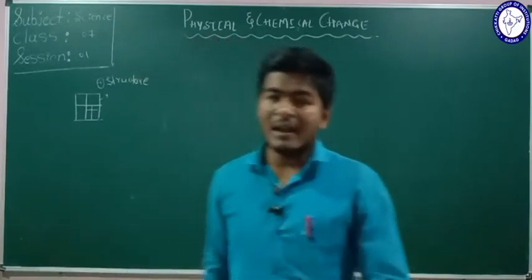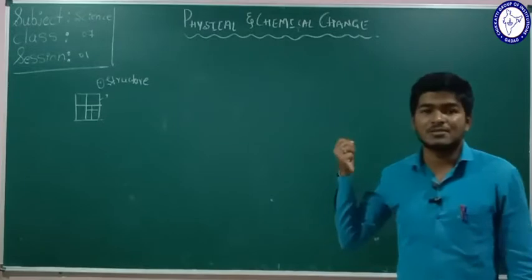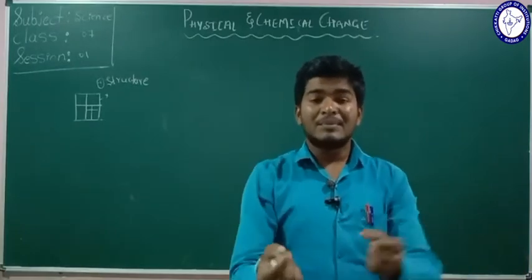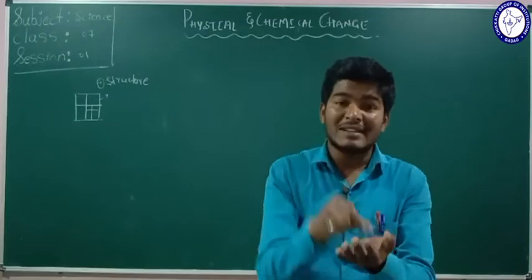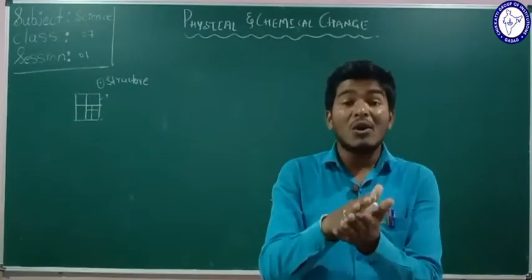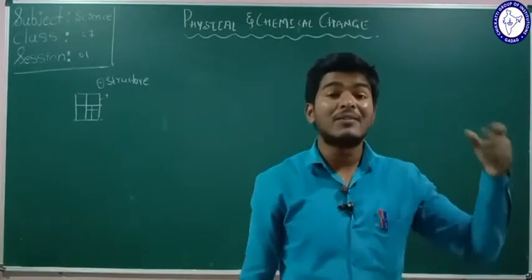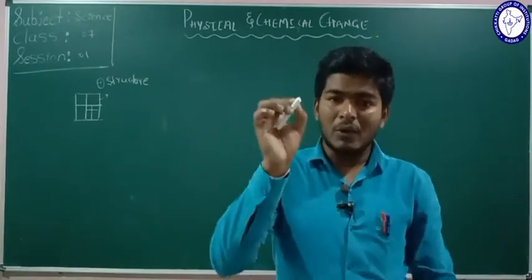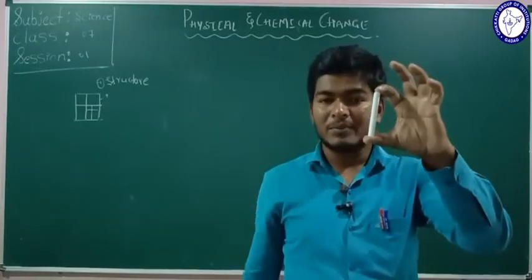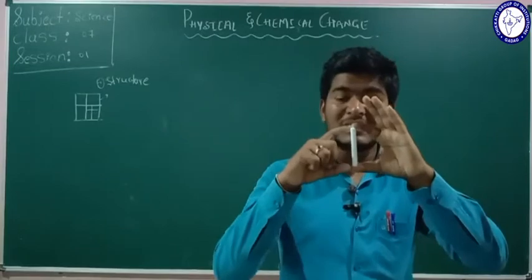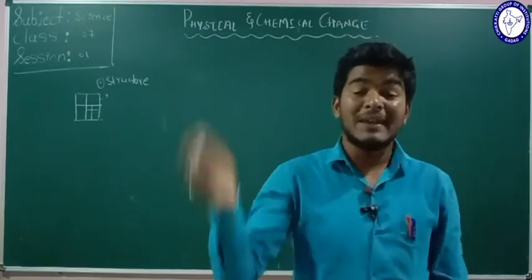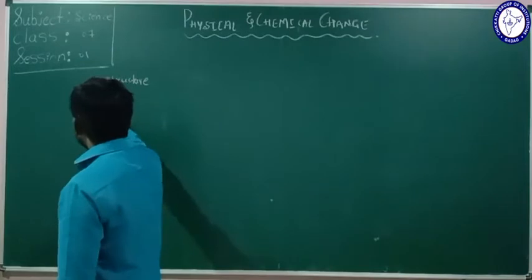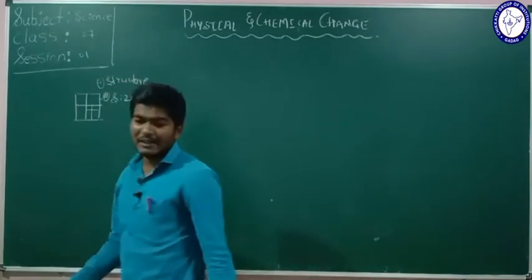Another example: collect some chalk dust from a chalk piece and pour some water into that chalk dust to make a paste. Roll it and dry it in the sunlight. Would you get the same size of chalk from the chalk powder? No, the size is somewhat changed. That is the second example — a change in size.